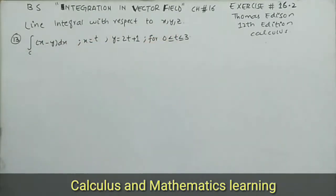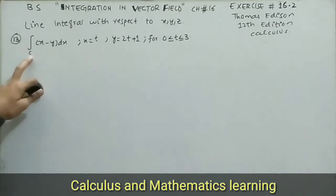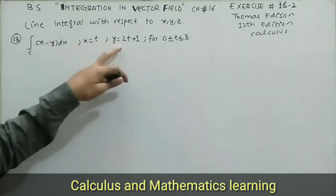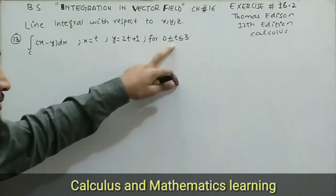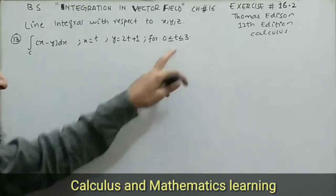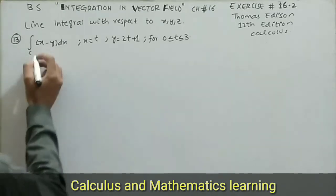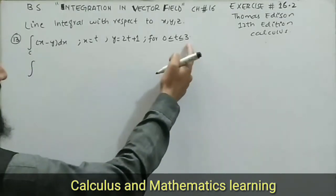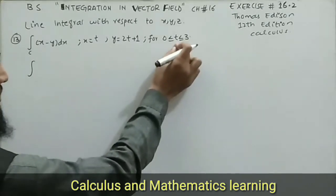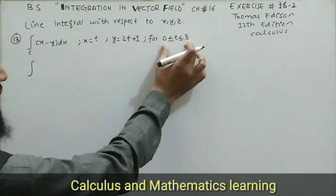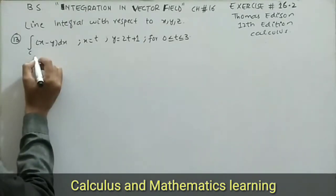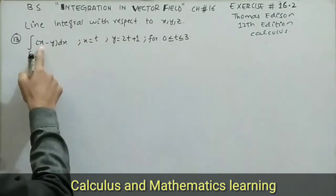In question number 13 we are given the line integral with respect to x, y, z. Find the integral along curve C of (x minus y) dx, where x equals t, y equals 2t plus 1, and 0 ≤ t ≤ 3. By putting these values, t lies in the interval [0, 3], so the lower limit is 0 and the upper limit is 3.